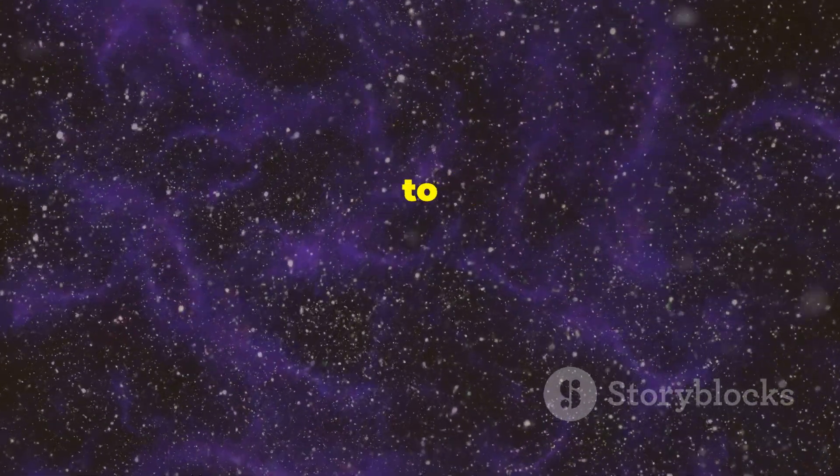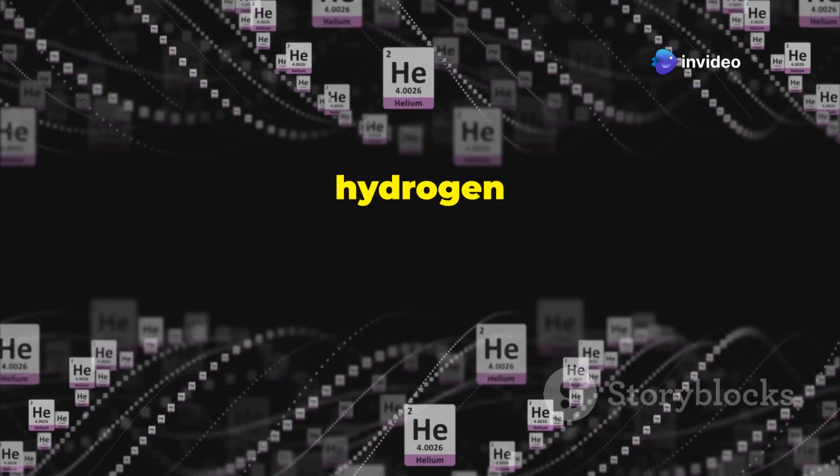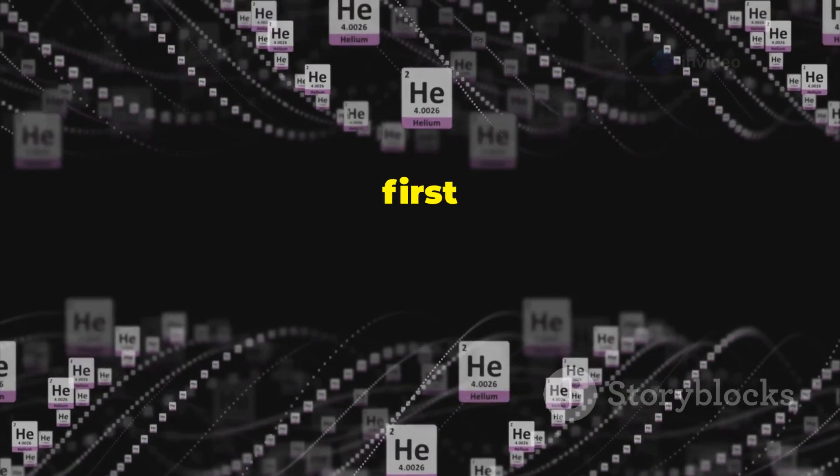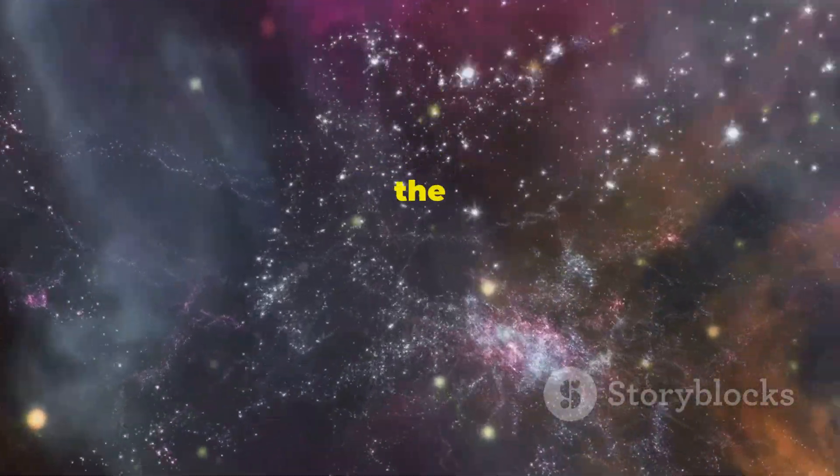These elements would later become the raw materials for stars, galaxies, and ultimately life itself. From the chaos of the Big Bang, the universe was beginning to take shape. Imagine a giant construction set scattered across the floor. The Big Bang was like scattering the pieces. The formation of hydrogen and helium was like assembling the first basic blocks.